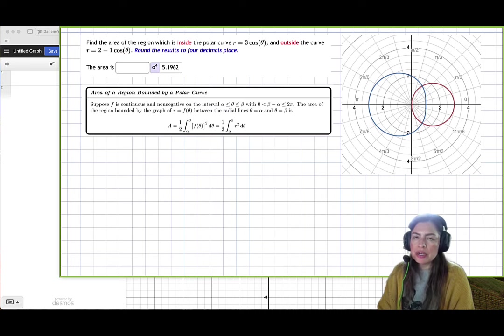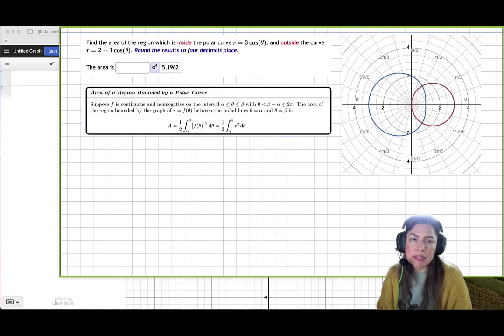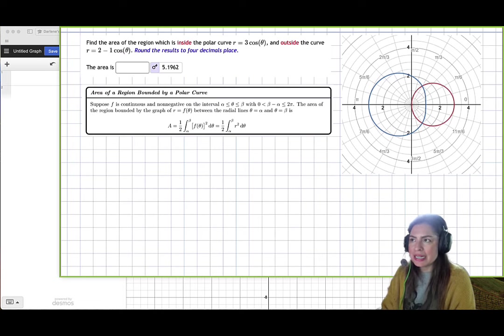We're going to need a couple of things here. The first thing we need to know is the area of a region bounded by a polar curve. And we'll probably need, just like before, some sine and cosine identities, which we'll probably see later on.